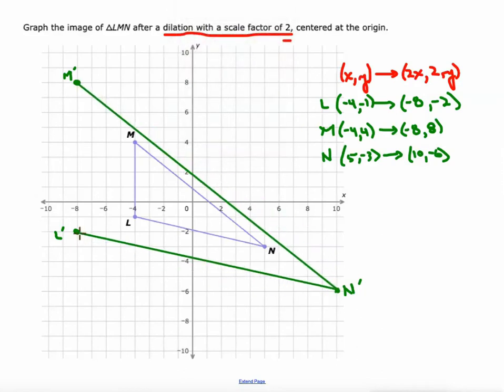A couple of interesting things after a dilation, you'll see the corresponding sides are parallel to each other. So M prime N prime is parallel to MN, and M prime L prime is parallel to ML. Also, if you run a line through the origin, and the original vertex, and the new vertex, they'll all be in a straight line. So that is a characteristic of a dilation.